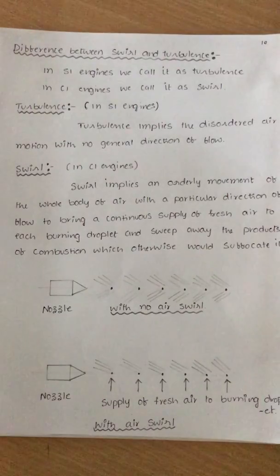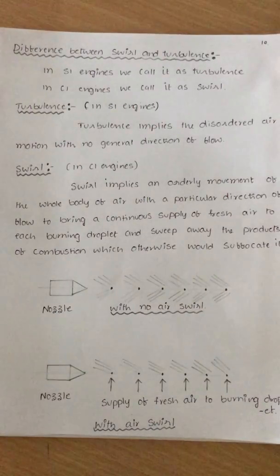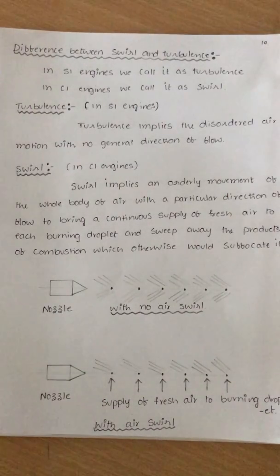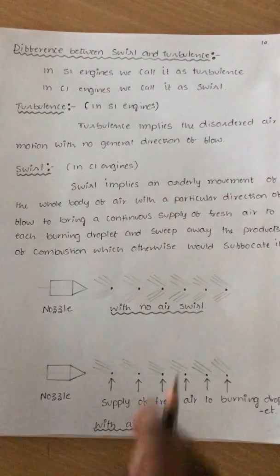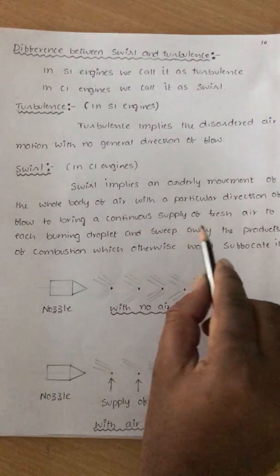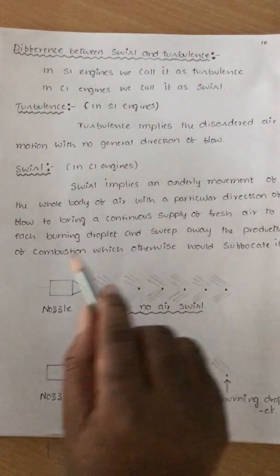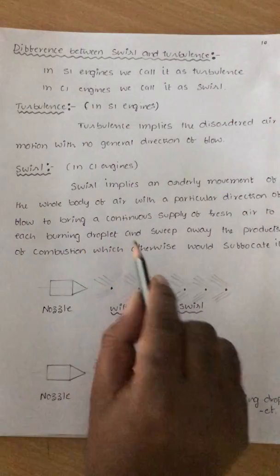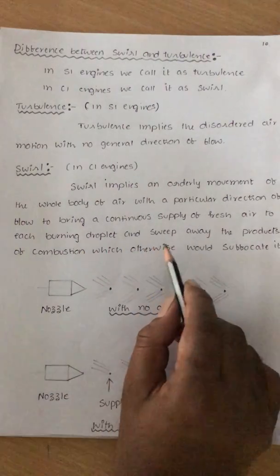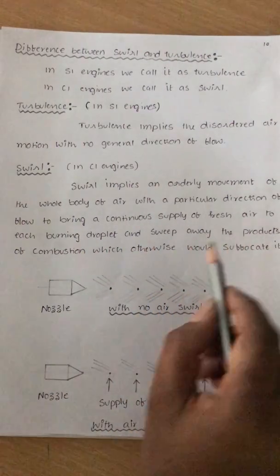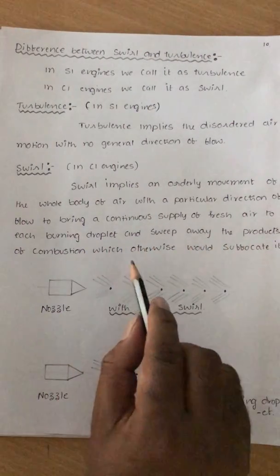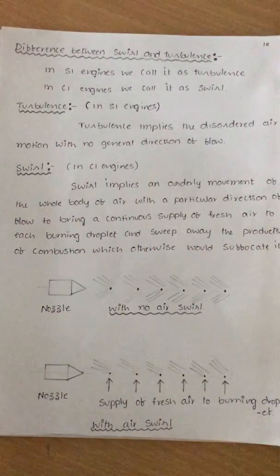Swirl implies an orderly movement of air with a particular direction of flow, to bring a continuous supply of fresh air to each burning droplet and sweep away the products of combustion, which otherwise would suffocate it.